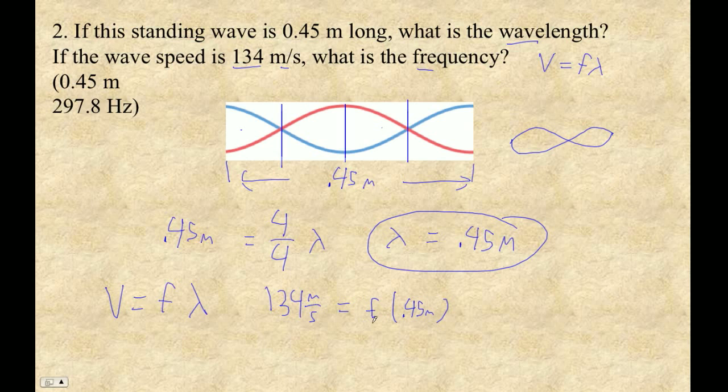So I divide this by this to get the frequency. So 134 divided by 0.45. It goes by as frequently as 297.7 times every second, which is hertz. So 297.8 hertz.